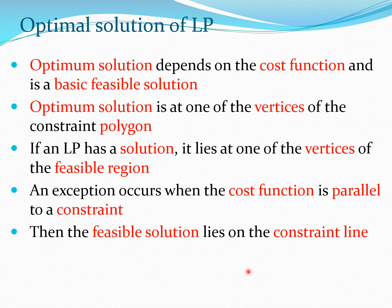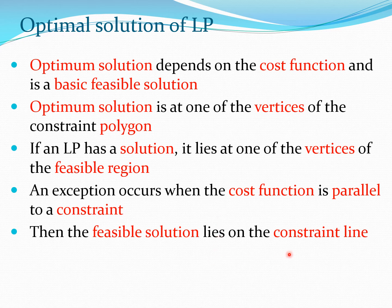Key takeaways from this exercise: the optimal solution depends on the cost function and is a basic feasible solution; it lies at one of the vertices of the constraint polygon. An exception occurs when the cost function is parallel to a constraint, in which case the feasible solution lies on a constraint line.